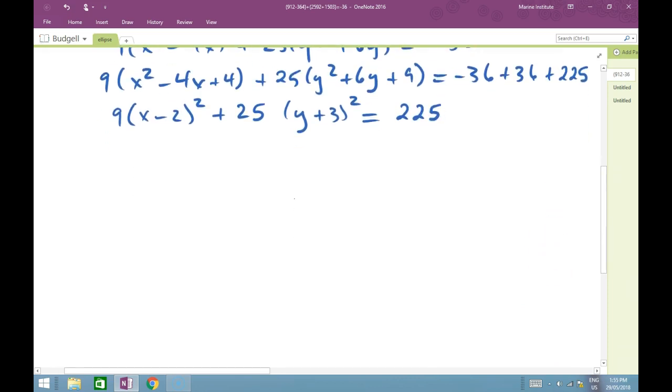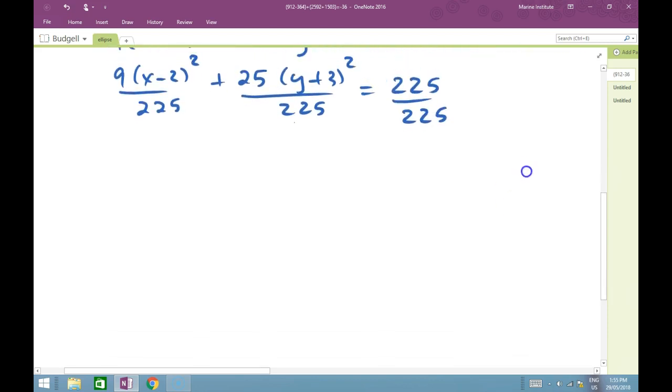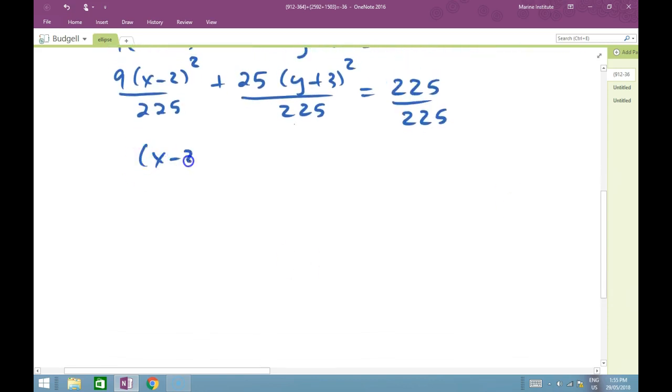Now, in an equation of an ellipse, we have to have the 1 here. So we're going to divide everything by 225. So 9(x - 2)² ÷ 225, 25(y + 3)² ÷ 225, and 225 ÷ 225. This gives us (x - 2)²/25 + (y + 3)²/9 = 1. So this right here is the standard equation of an ellipse.